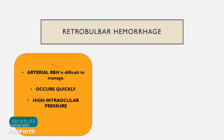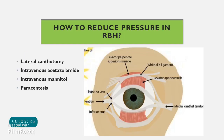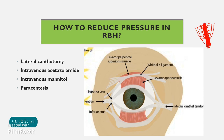Arterial retrobulbar hemorrhage occurs quickly with very high pressure because arterial system pressure is greater. Apply firm digital pressure over the eyeball. Compression devices like Honan's ball can be used. The blood accumulating in the intraconal space can compress the optic nerve — a compartment syndrome — causing optic nerve damage. To immediately decrease orbital pressure, perform a lateral canthotomy.